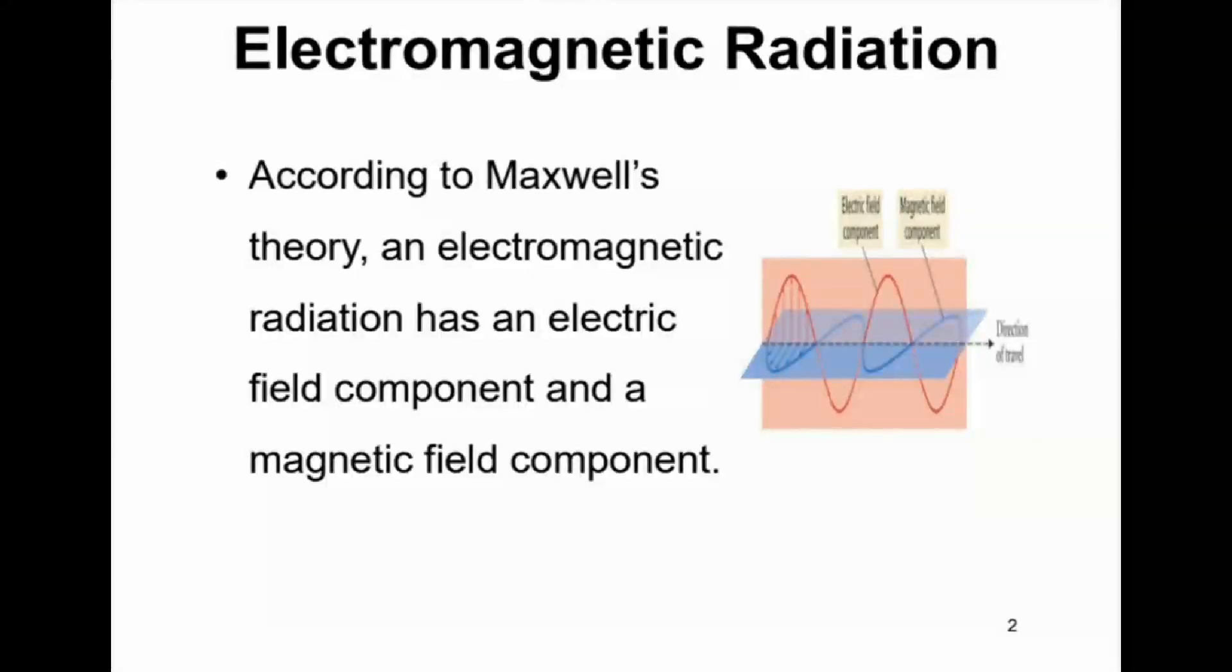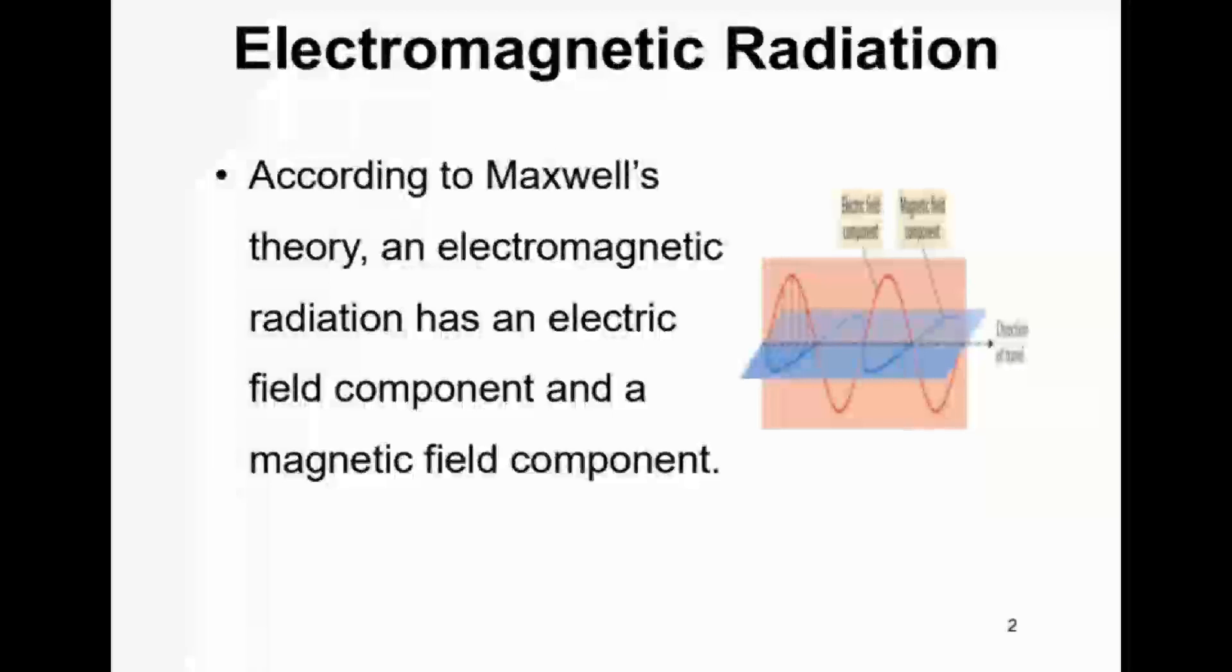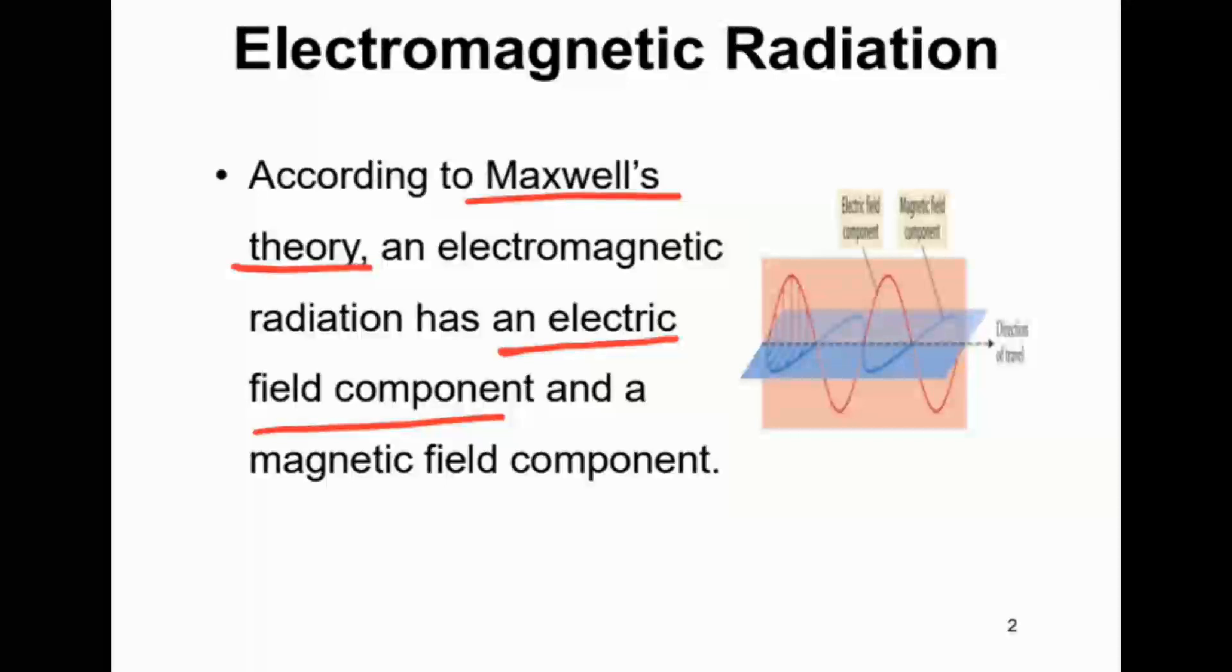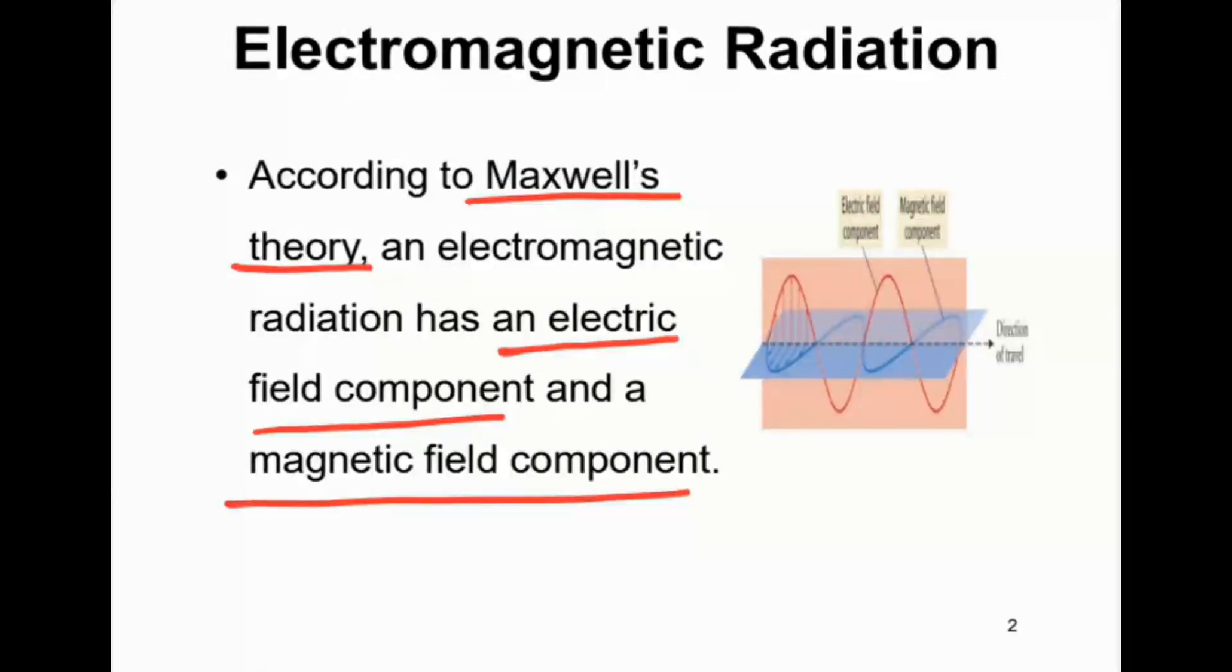So what are the two types of fields that exist in electromagnetic radiation? According to Maxwell's theory, an electromagnetic radiation has an electric field component and a magnetic field component. So according to Maxwell's theory, the two types of fields that exist in electromagnetic radiation are electric field and magnetic field.